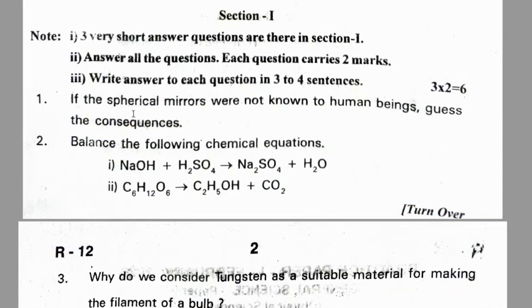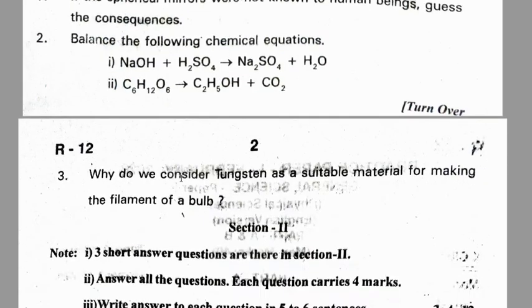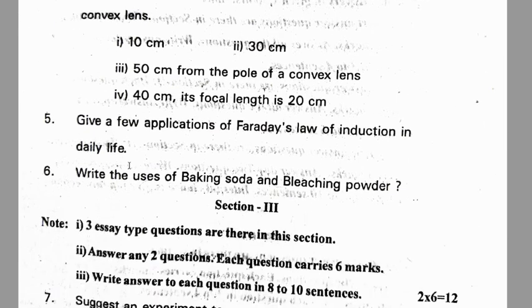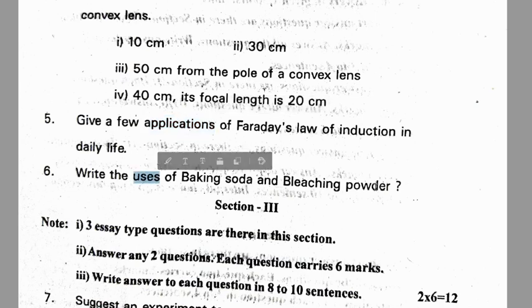Rangareddy practice paper: If spherical mirrors were not known to human beings, guess the consequences. Balance the following chemical equations. Why do we consider tungsten as a suitable material for making the filament of a bulb? Section 2: draw a ray diagram if an object is placed in front of a convex lens at 10 cm, 30 cm, and 50 cm, with focal length 20 cm. Give a few applications of Faraday's law of induction in daily life. Write the uses of baking soda and bleaching powder.